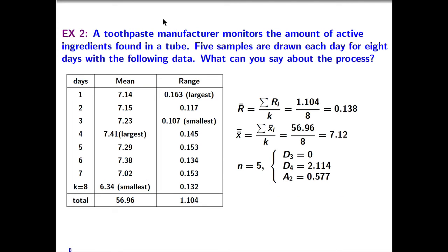Example 2: A toothpaste manufacturer monitors the amount of active ingredients in a tube. Five samples are drawn each day for eight days. What can you say about the process? Here k = 8 and n = 5.